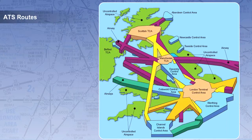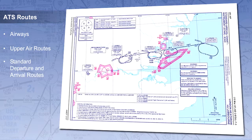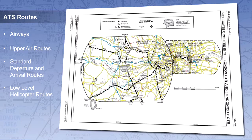ATS routes are defined as routes that are designated for channelling the flow of air traffic as necessary for the provision of air traffic services. An air traffic service route is any predetermined flight path that allows aeroplanes to fly from point to point. They include airways, upper air routes, standard departure and arrival routes, and low-level helicopter routes.